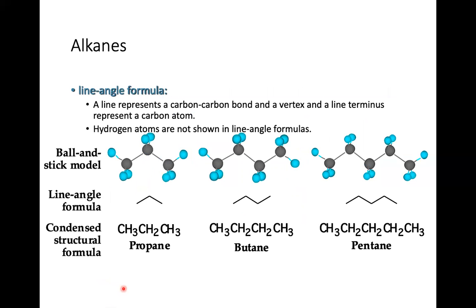Alkanes have a line angle formula. A line represents a carbon-carbon bond; a vertex and a line terminus represent the carbon atom. Hydrogen atoms are not shown in the line angle formula — each corner has a carbon and the hydrogens are not visible. This is the condensed structural formula for propane, and this is the line angle formula for butane: CH3CH2CH2CH2CH3.